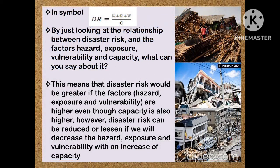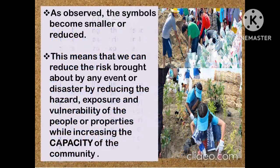By looking at the relationship between disaster risk and the factors — hazard, exposure, vulnerability, and capacity — disaster risk could be greater if hazard, exposure, and vulnerability are higher even though capacity is also higher. However, disaster risk can also be reduced if we decrease the hazard, exposure, and vulnerability with an increase of capacity.